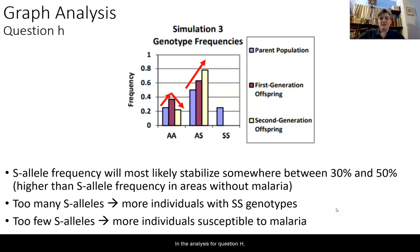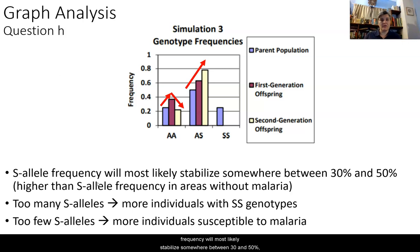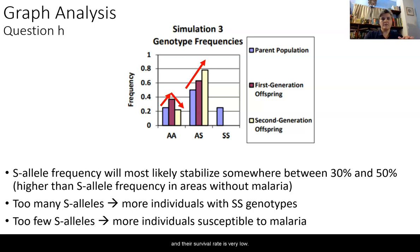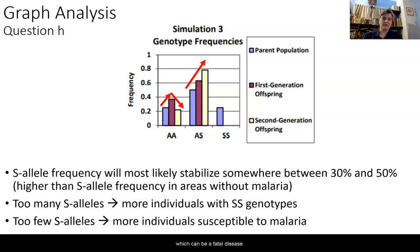For the analysis in question H, predicting what could happen in simulation three: the S allele frequency will most likely stabilize somewhere between 30 and 50 percent — higher than the S allele frequency in areas without malaria. If there are too many S alleles, more individuals will have the SS genotype with very low survival. If there are too few S alleles, more individuals are susceptible to malaria, which can also be fatal.